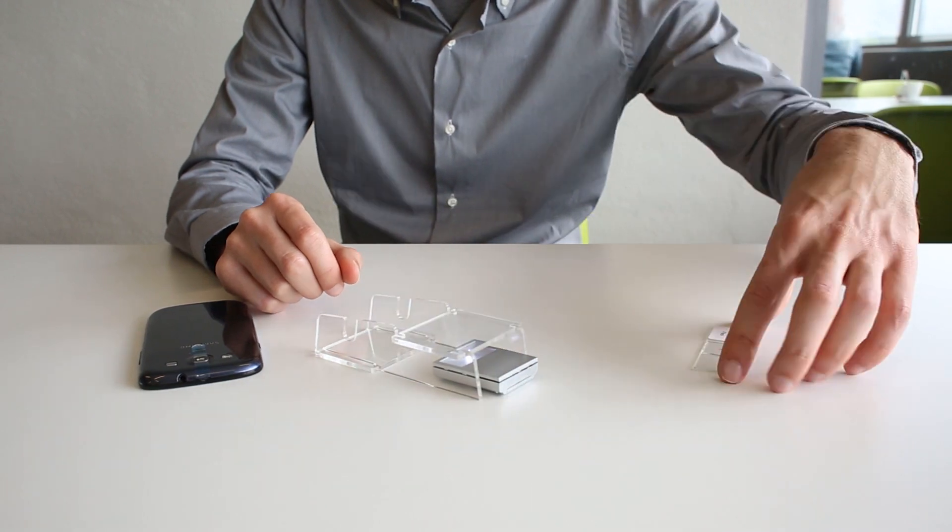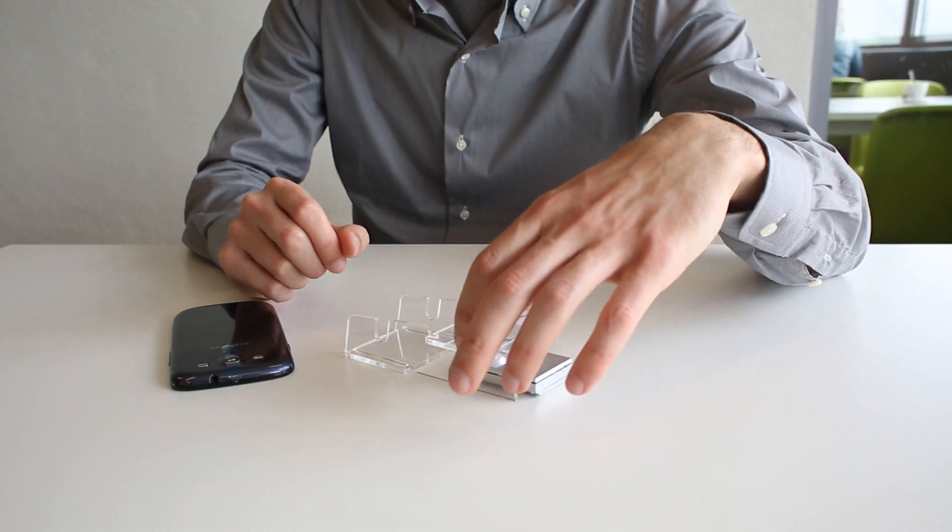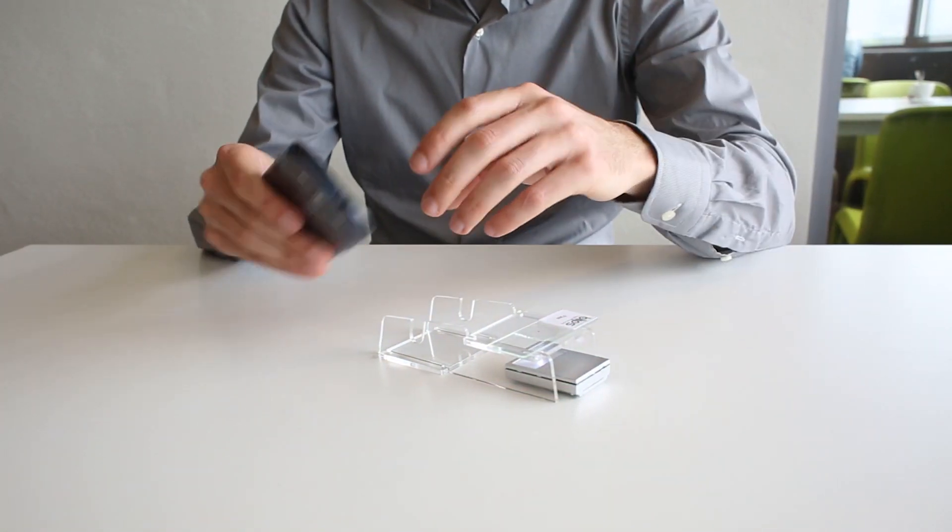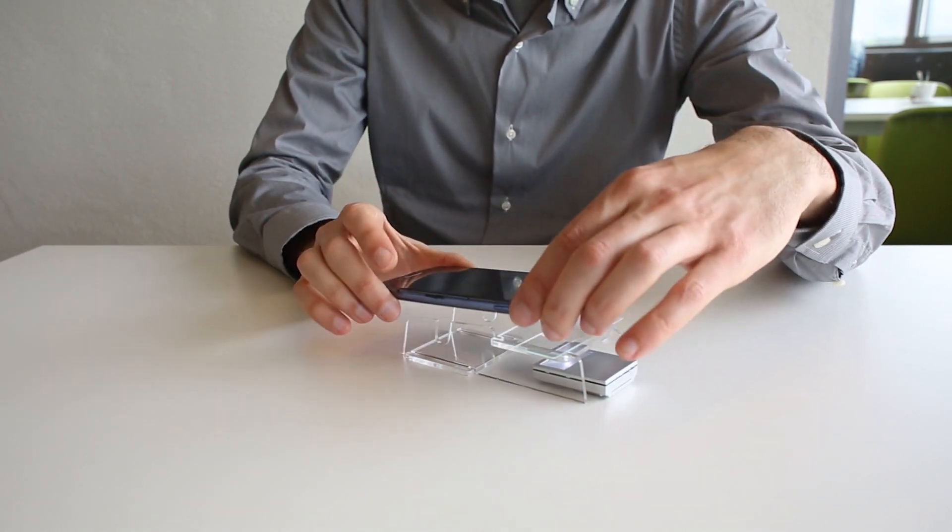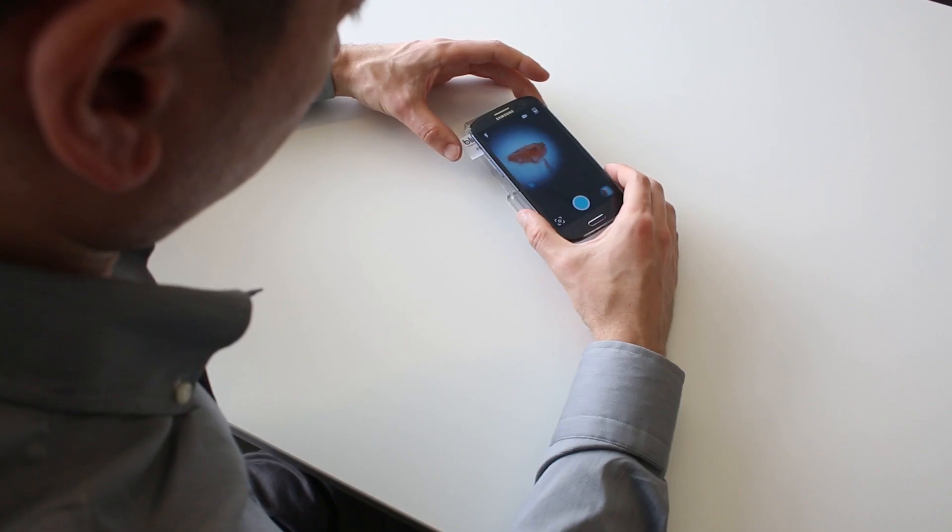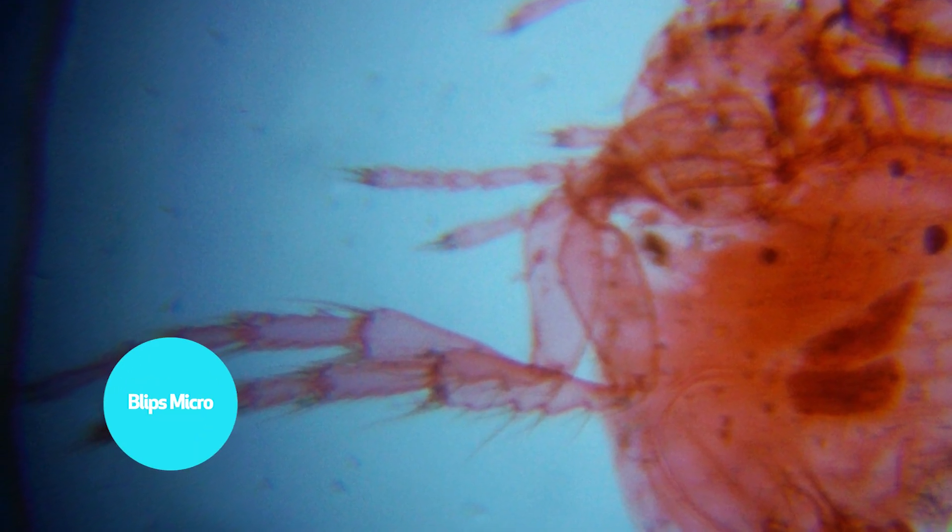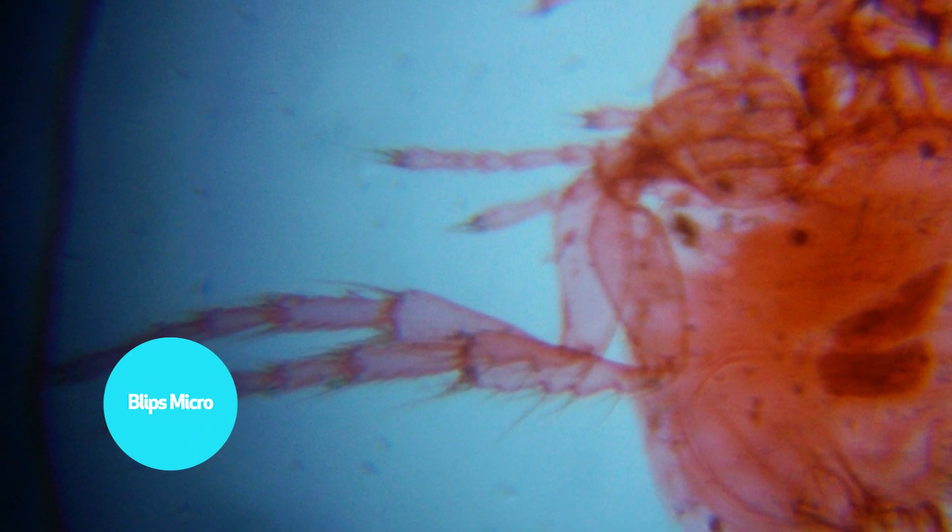Blips Micro is perfect to observe the tiniest of details and represents a first step into the realm of microscopy. It can distinguish details of a few microns and allows to capture images of cells and inhabitants of the micro world.